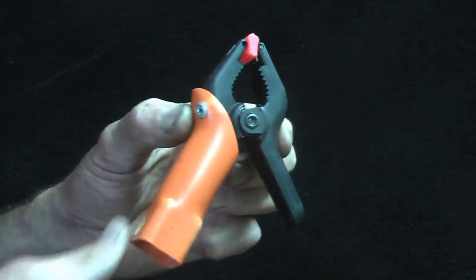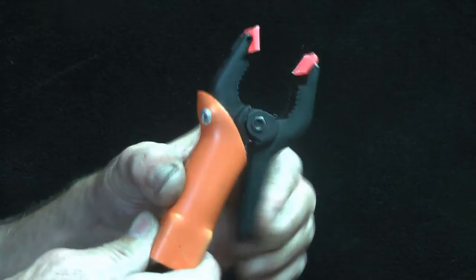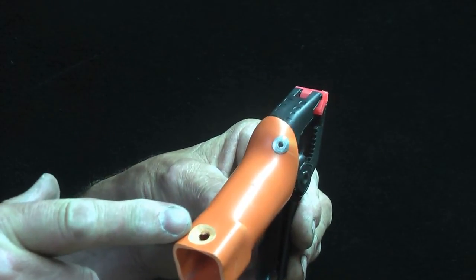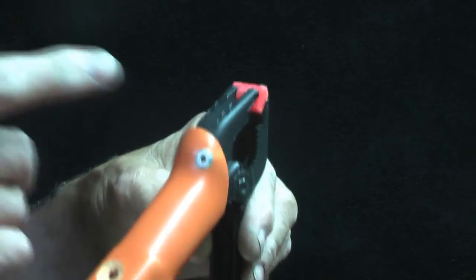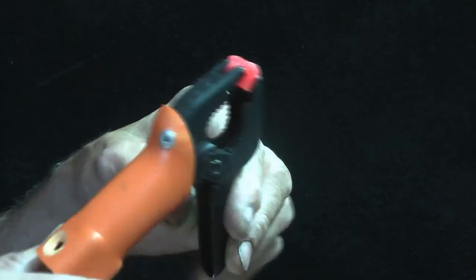Okay, here's the clamp. As you can see, the handle here has got a quick lock connection, and you can see we've pop riveted on the clamp like this.